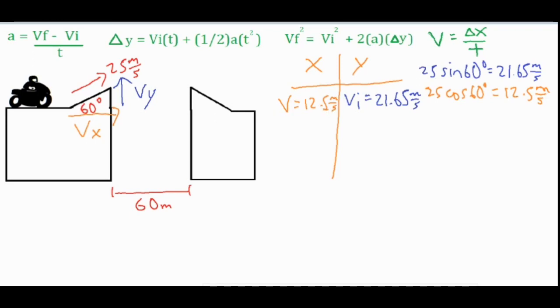Now for this problem we're going to fill out some more stuff in our y column. Our acceleration due to gravity is negative 9.8 meters per second squared, and then also if they're returning back to the same level that they took off from, the final vertical velocity is going to be the same as the initial but downwards, so it's negative 21.65 meters per second.